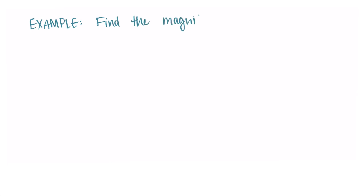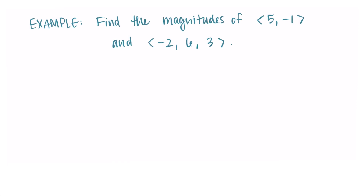Let's find the magnitudes of the vectors ⟨5, −1⟩ and ⟨−2, 6, 3⟩. With these formulas in mind, why don't you pause the video now and try it out to see what you get for the magnitudes of each of these vectors? It's also good practice to write these things down to work on your new notation, since a lot of this is probably new and it might be the first time you've written these symbols.